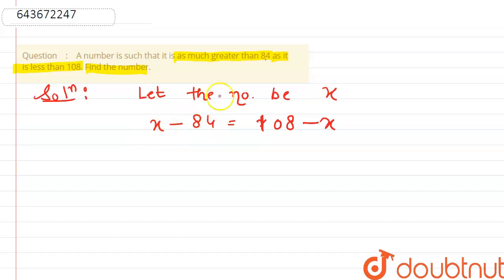That means clearly, a number is as much greater than 84 as it is less than 108. 'As it is' means equal to. As much greater than 84 means we subtract 84 from the number, and that will be equals to 108 minus x.